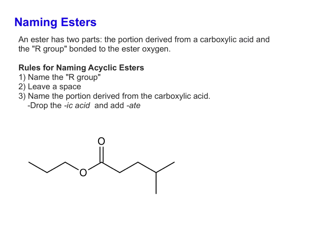In this video we're going to work through some systematic naming of esters. The most important thing to keep in mind is that an ester has two parts you have to deal with. The first is the portion that's derived from a carboxylic acid - that is your carbonyl with the oxygen and then your group coming off of that carbonyl carbon. The second part is the R group that's bonded to the ester oxygen, which replaces the hydrogen of a carboxylic acid.